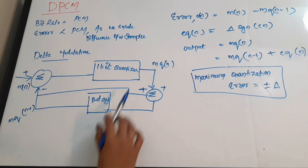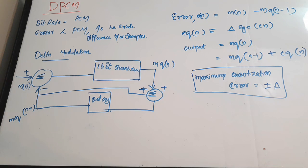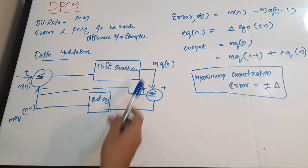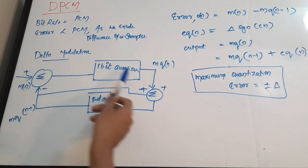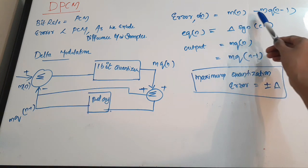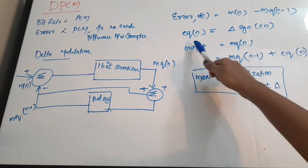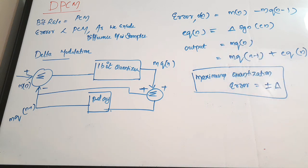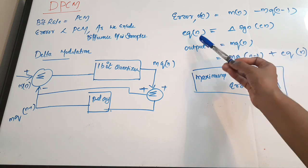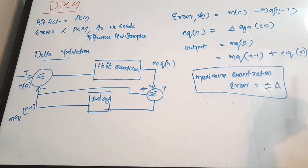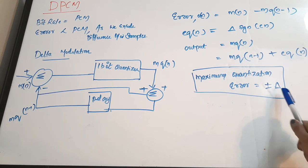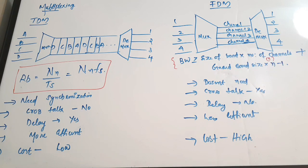In delta modulation, we quantize the difference between the current and previous samples. The error is E(n) = M(n) − MQ(n−1), the quantized value = delta × sgn(E(n)), and the output MQ(n) = MQ(n−1) + quantized value. The maximum quantization error in delta modulation is ±delta, where delta is the quantization step size.